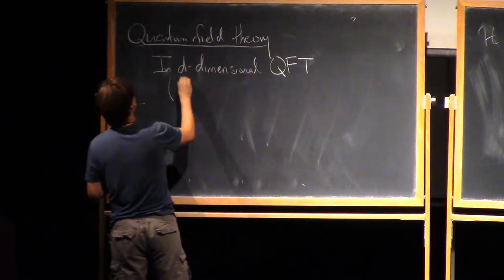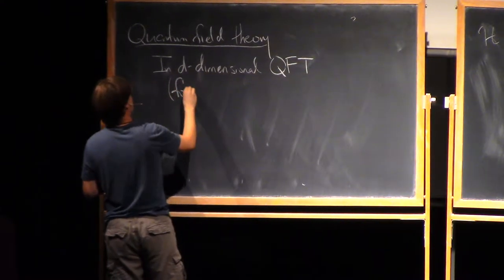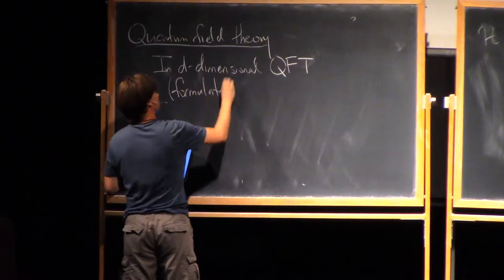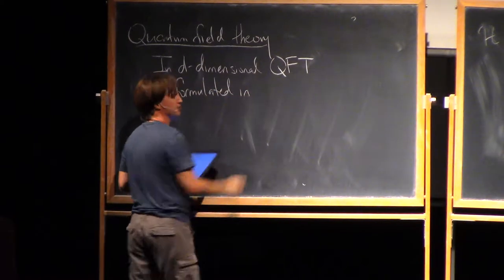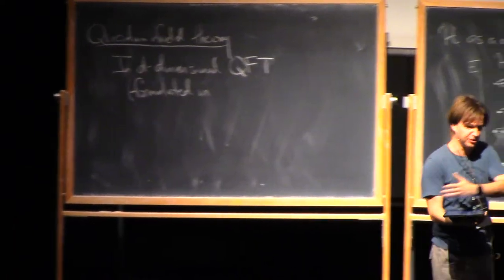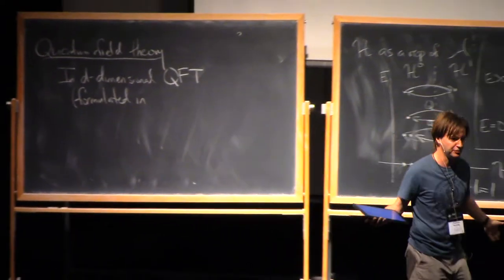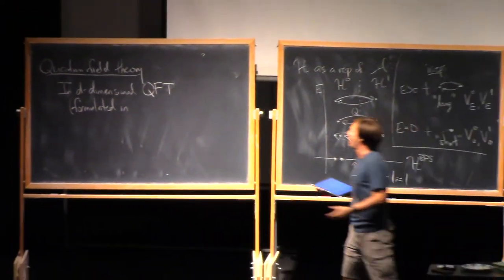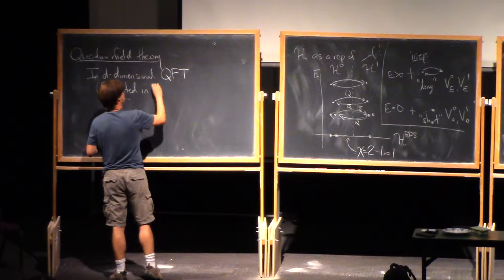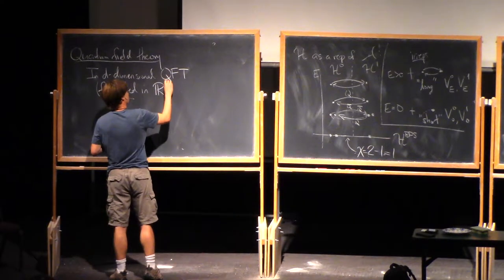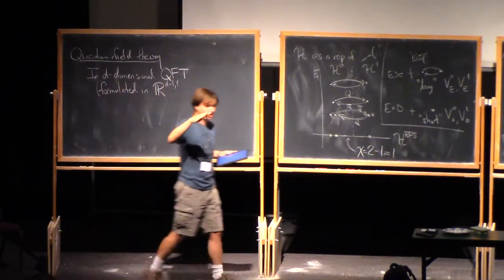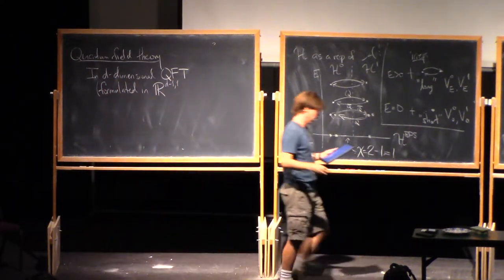D-dimensional quantum field theory — in general, you have a d-dimensional quantum field theory, and you could imagine trying to formulate it on some general d-dimensional manifold. Let me just formulate it in d-dimensional Minkowski space, so R to the d minus 1 comma 1.